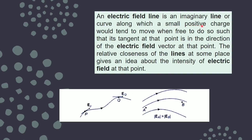That unit positive charge is negligibly small and positively charged, then our field will be equal to the force. The direction at any point is given by the tangent at that point — at point P the direction is along the tangent EP, at point Q it is along the tangent EQ. If the lines are closer, that means the field is strong; if the lines are apart, it means the field is weak. At point A the electric field is stronger than at point B, so relative closeness of the lines gives you an idea about the intensity of the electric field.